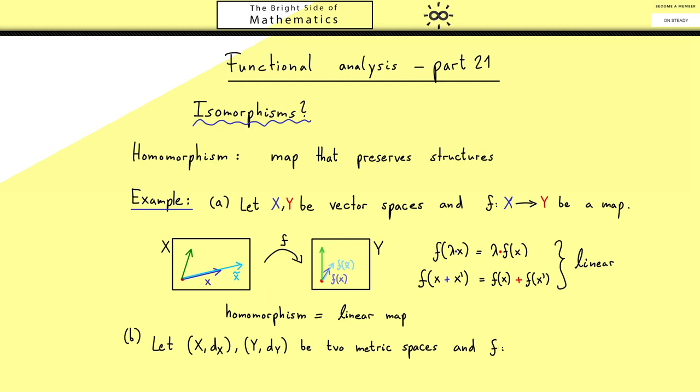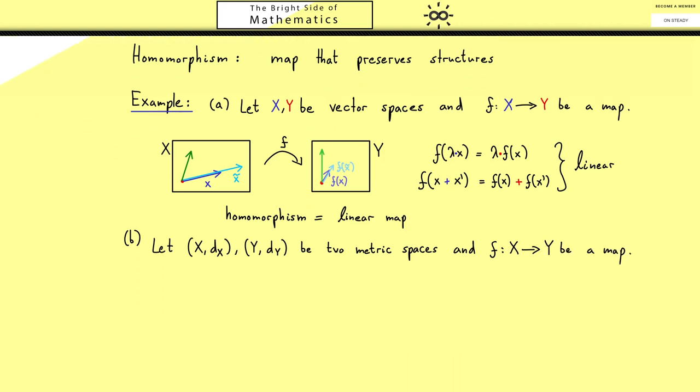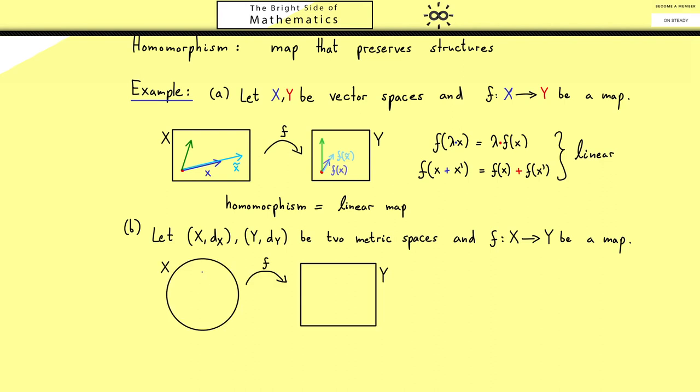Therefore the question here would be now for a map f from X to Y, what do we want to preserve? For this let's use some pictures again. Now the only thing we can actually do in a metric space is measuring the distance between two points. Then after mapping the two points to the right hand side we can measure the distance there. Hence our structure is this distance given by the two metrics here. Therefore the question is what is the correct relation between these two numbers here.